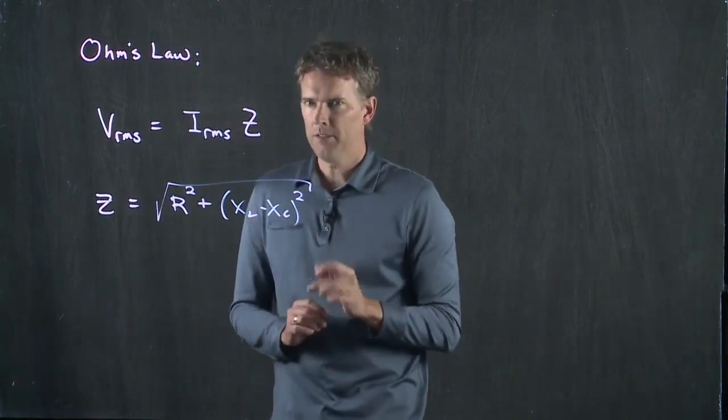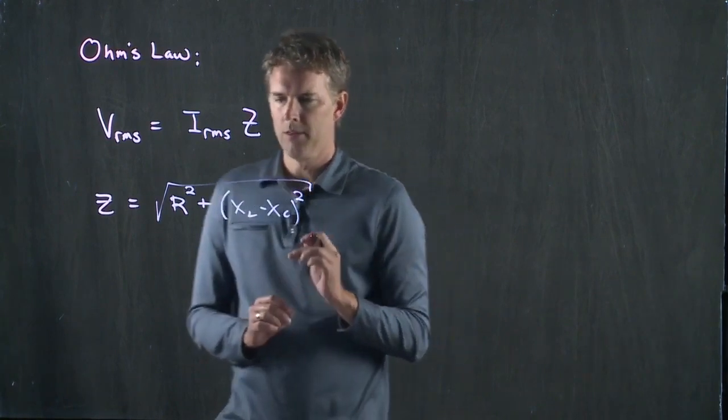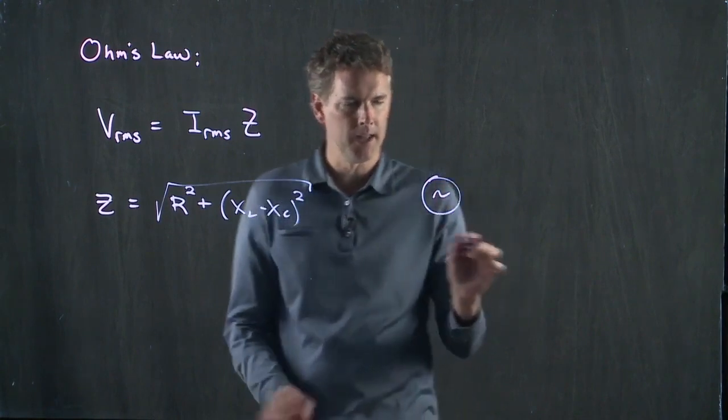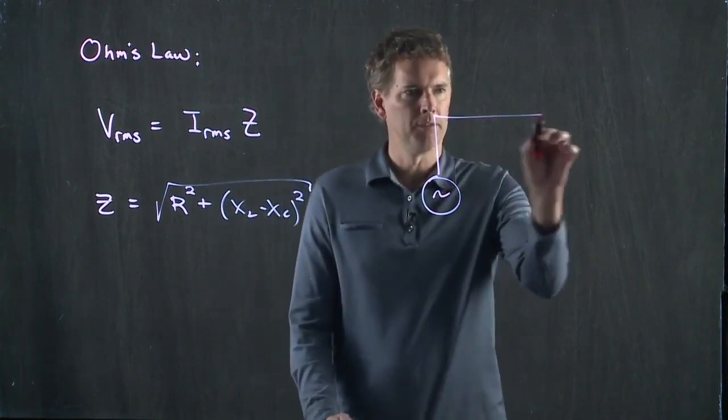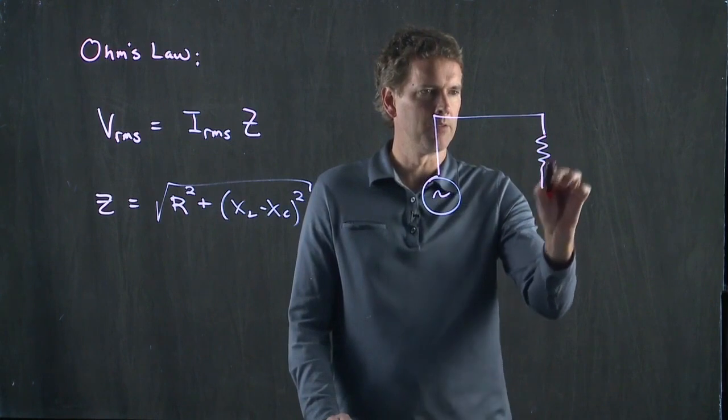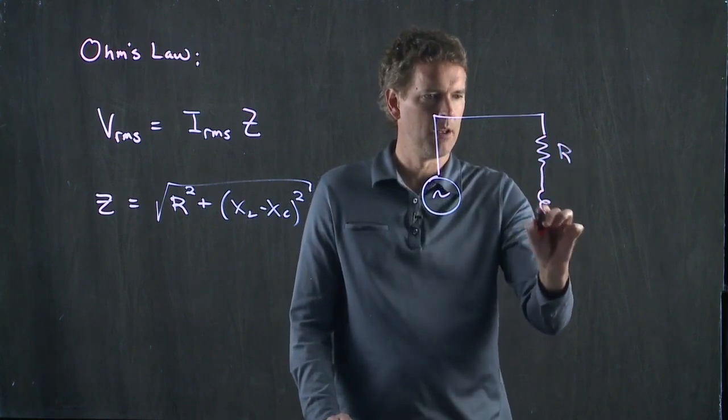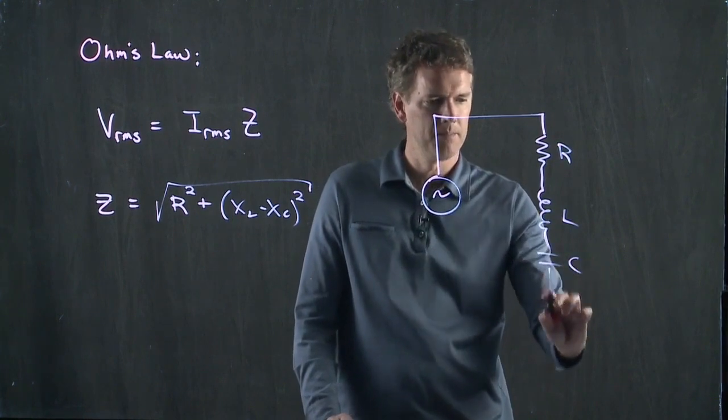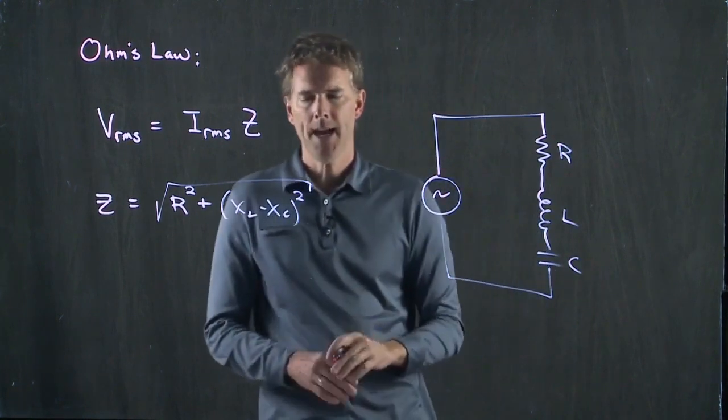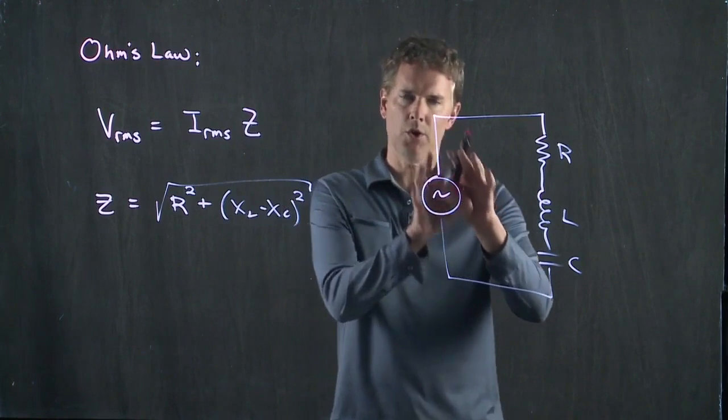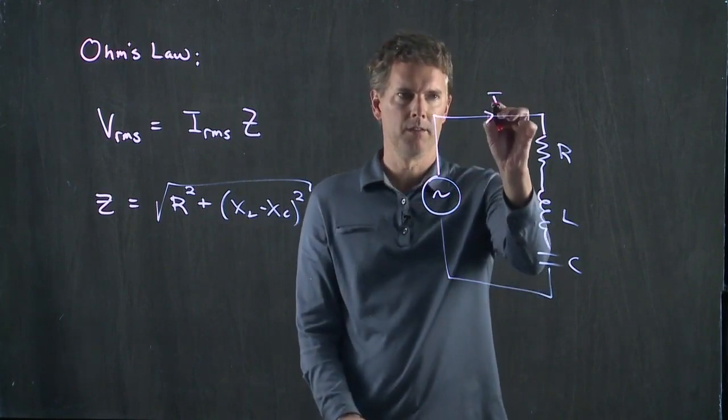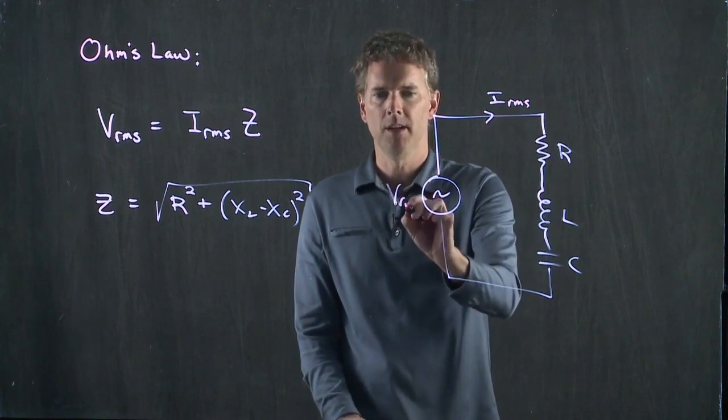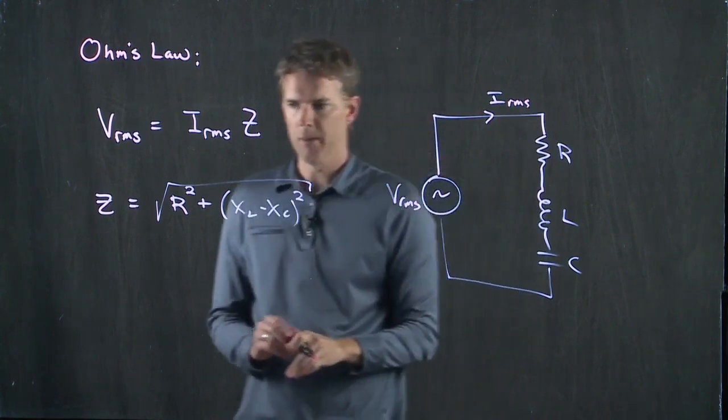So let's think about the following. Let's say we have an RLC circuit, kind of like you had in that clicker question, but let's rewrite it in this order, RLC. And now let's think about the current in this circuit, specifically what is IRMS given some VRMS.